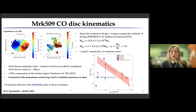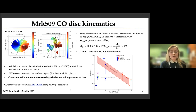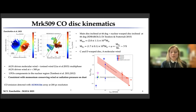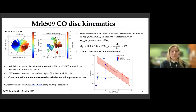For the more nuclear region, we found that it shows a similar velocity with respect to the ionized wind found by Leo et al. 2015. Therefore, we propose the presence of a multiphase AGN-driven wind at a radius of about 300 parsec. Comparing the energetics of this multiphase wind with the energetics of the UFO component, we found that this wind is consistent with a momentum-conserving wind driven by radiation pressure on dust, as shown by the plot on the right.